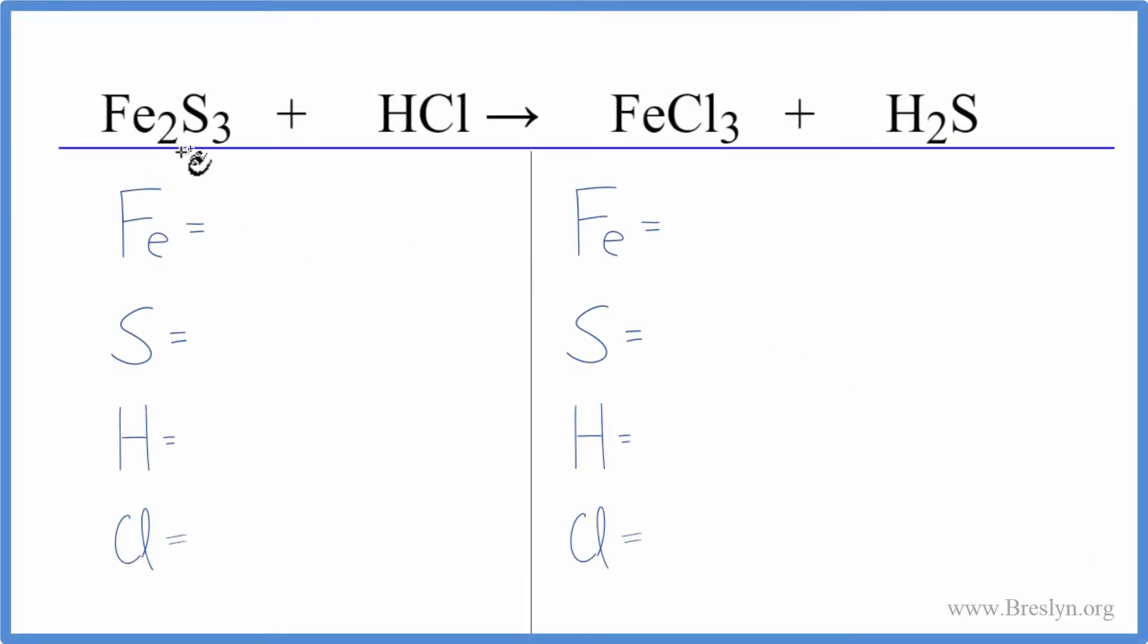In this equation, we have Fe₂S₃ plus HCl. That's iron 3 sulfide plus hydrochloric acid. Let's count the atoms up on each side and balance the equation.